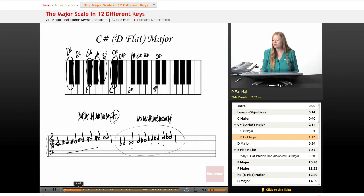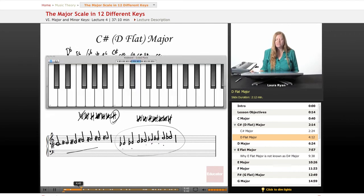Let's call up the keyboard and think about it both ways. C sharp: C sharp, D sharp, E sharp, F sharp, G sharp, A sharp, B sharp, C sharp. Let's think about it as D flat: D flat, E flat, F, G flat, A flat, B flat, C, D flat. So D flat feels a little easier to think about and play than C sharp.